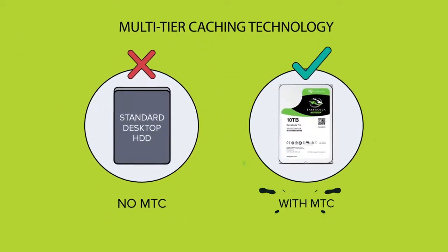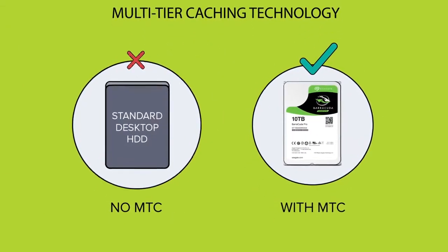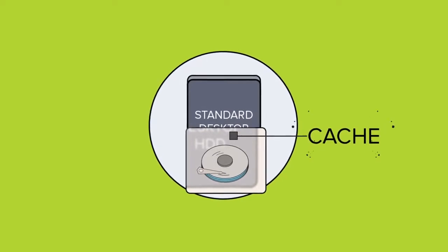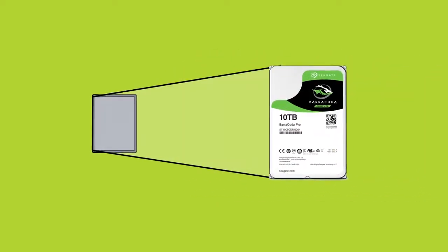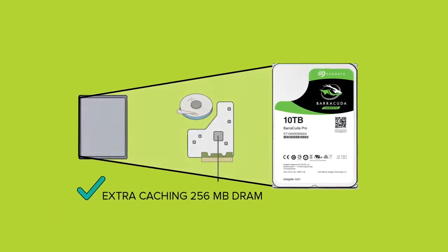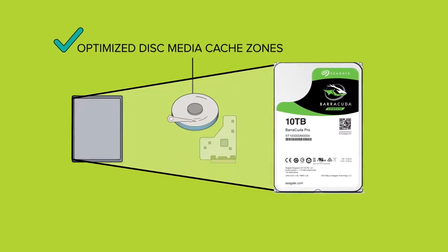Seagate boosts Barracuda Pro performance with multi-tier caching technology. Mark's drive uses the same disks and tiny cache that hard drives have used for over 20 years. Multi-tier caching gives Maya's Barracuda Pro enhancements like extra caching DRAM and optimized disk media cache zones.